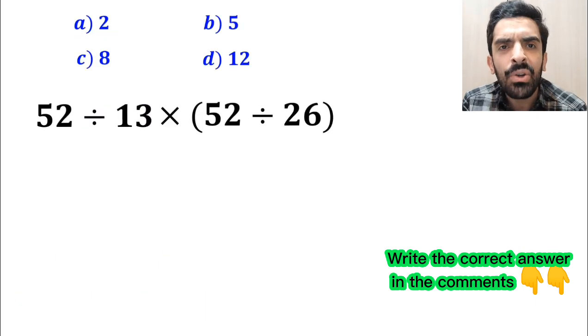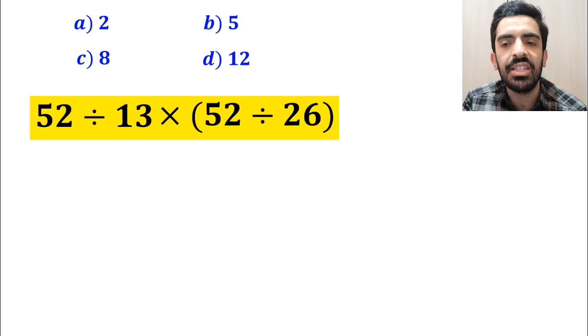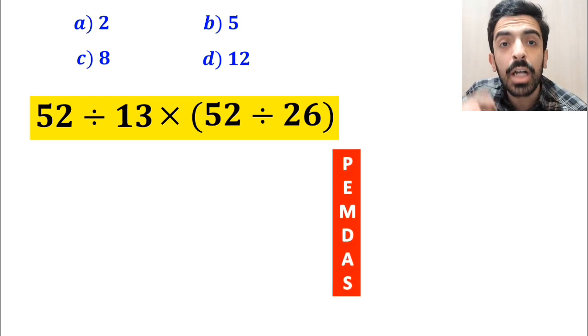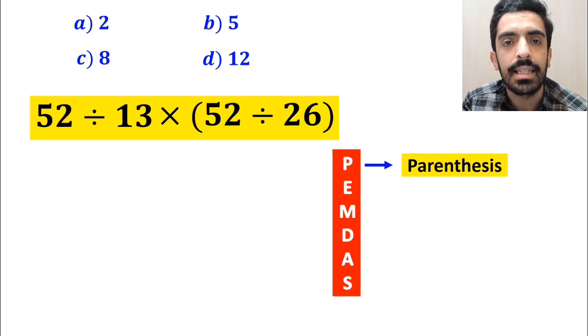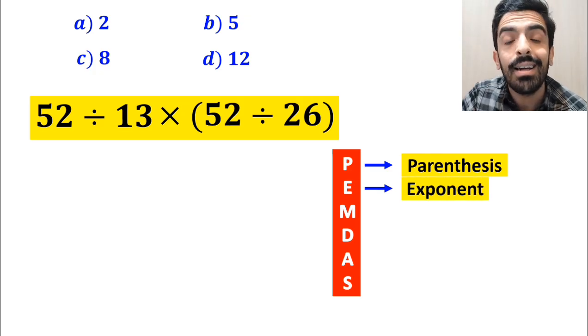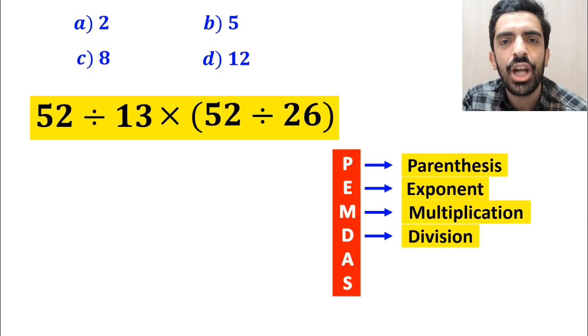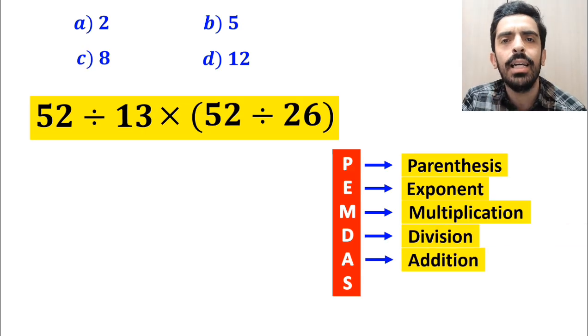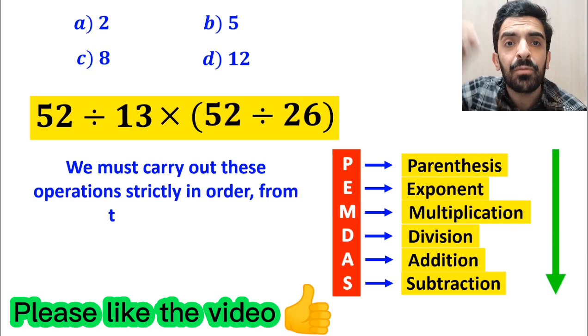Alright, now let's go through this question step by step and solve it together. To solve this question, we need to follow the PEMDAS rule step by step. According to this rule, P stands for parenthesis, E stands for exponent, M stands for multiplication, D stands for division, A stands for addition, and S stands for subtraction. We must carry out these operations strictly in order from top to bottom.